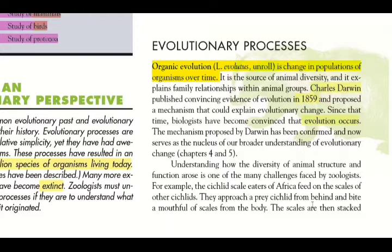Organic evolution refers to change in populations of organisms over time. Due to this process, animal diversity occurs, and it also explains the family relationships within animals.